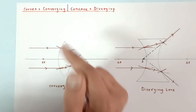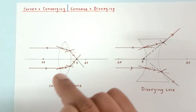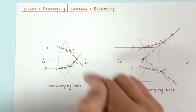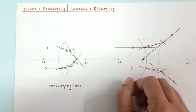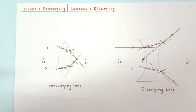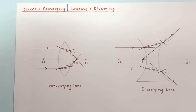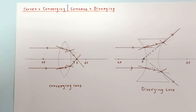The most important part is to draw the normal correctly. If you are able to draw the normal for each and every incident ray, you are done. Hopefully you have enjoyed the explanation. Please subscribe to my channel if you haven't already, share and like the videos, and thank you for watching.